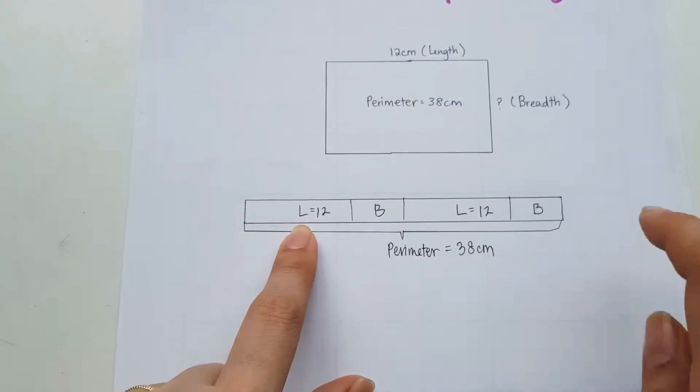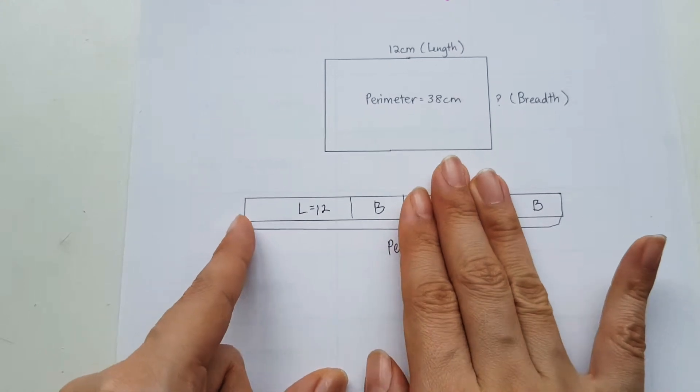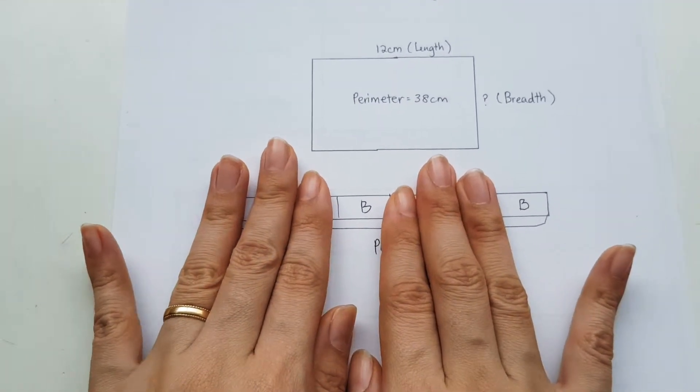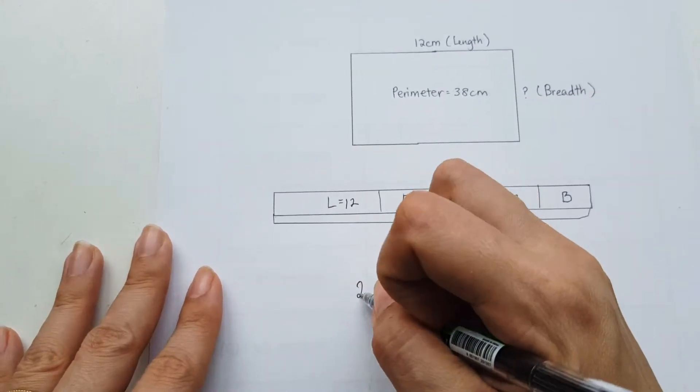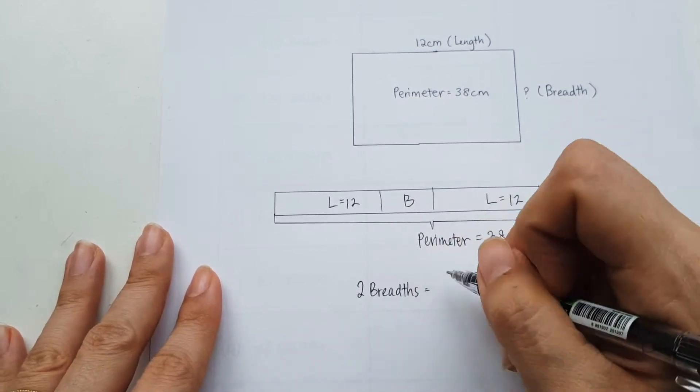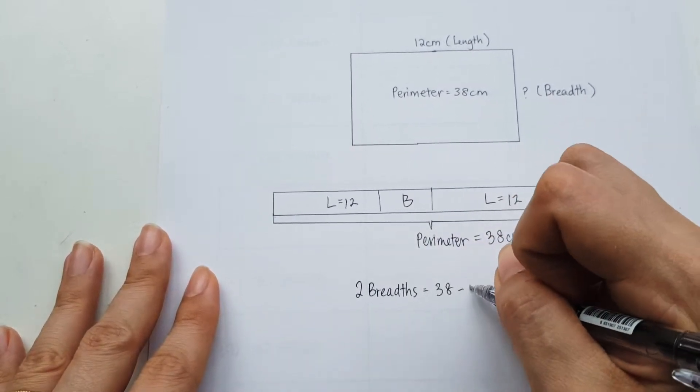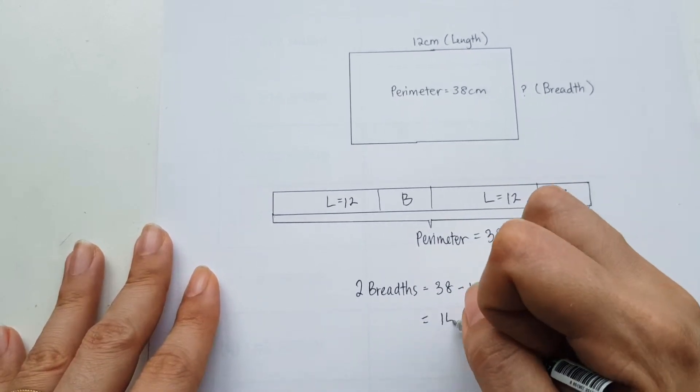So I'm going to be using the perimeter, this whole bar. And I'm going to be taking away this length and this length. And as you can see what's left, it will be 2 breadths. So I'm going to write it down. 2 breadths will be equal to 38 minus 12 minus 12, which will give me 14 cm.